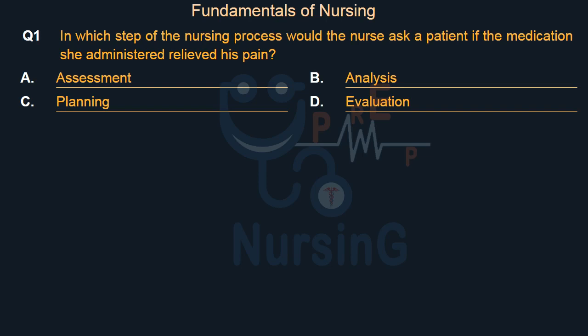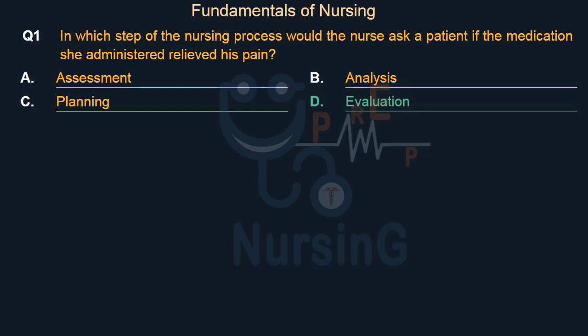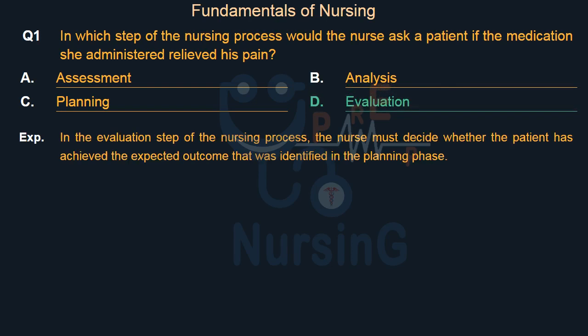Right answer is Option D: Evaluation. In the evaluation step of the nursing process, the nurse must decide whether the patient has achieved the expected outcome that was identified in the planning phase.